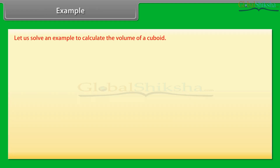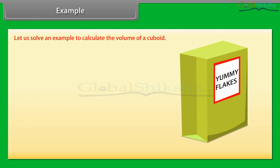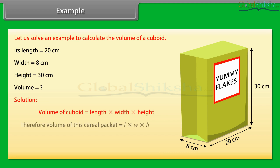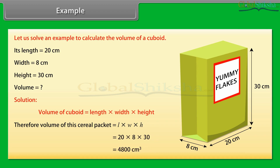Let us solve an example to calculate the volume of a cuboid. Look at this cereal packet. Its length is 20 cm, width is 8 cm and height is 30 cm. We have to find its volume. We know that the volume of a cuboid is length into width into height. Therefore, volume of this cereal packet equals L into W into H, which is equal to 20 into 8 into 30, and this equals 4,800 cm cube.